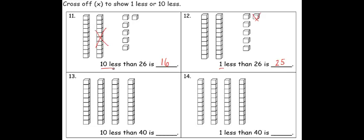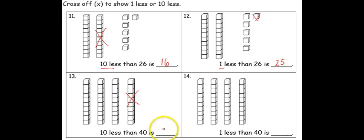In question thirteen, we're asked what is ten less than forty. I have my four sticks to represent forty. I'm going to cross one stick off, because that's crossing off ten. That leaves me with three sticks of ten, or three groups of ten, and that would be thirty. Ten less than forty is thirty.